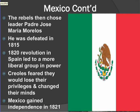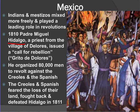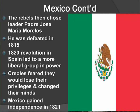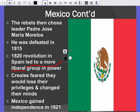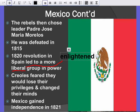The rebels continue to fight under their new leader, Padre Jose Maria Morelos, but he's defeated in 1815. By 1820, the revolution is still ongoing. The Creoles fear they're going to lose their privileges and change their minds. A more liberal group in Spain — more dedicated to human rights — eventually gives Mexico its independence. So it's roughly a 10 to 11-year conflict before Mexico finally gains independence.